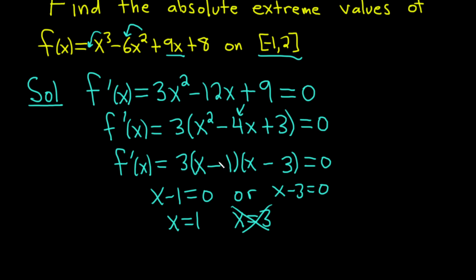Now that we have the critical numbers in this interval, we can go to the next step. That's basically to take the critical numbers, in this case just 1, as well as the endpoints, which are -1 and 2, and plug them back into the original function.